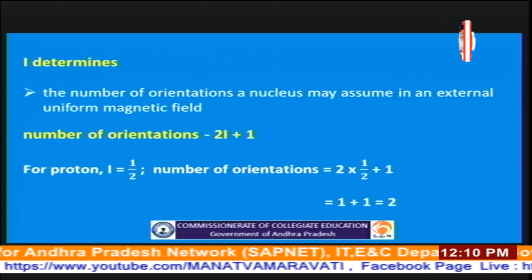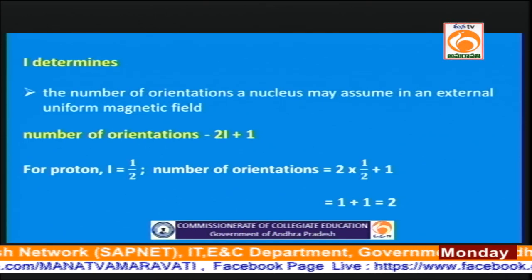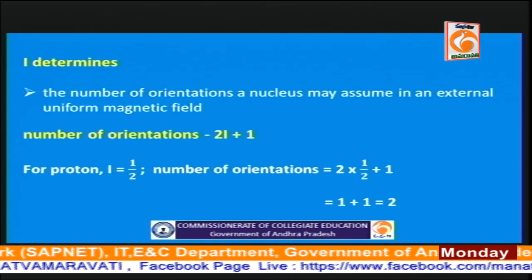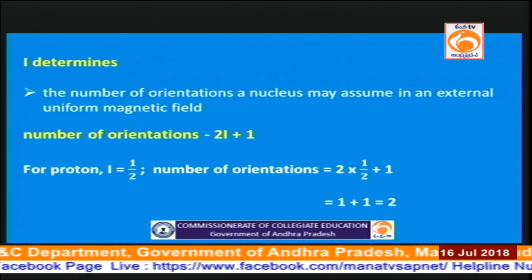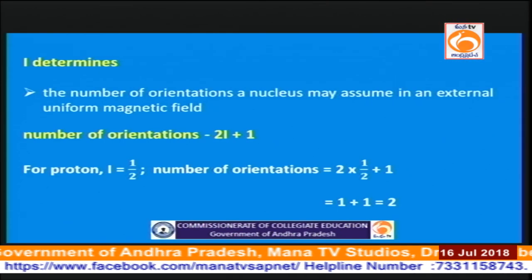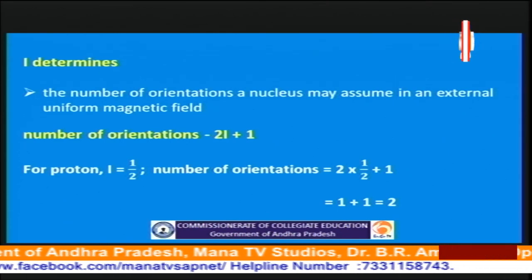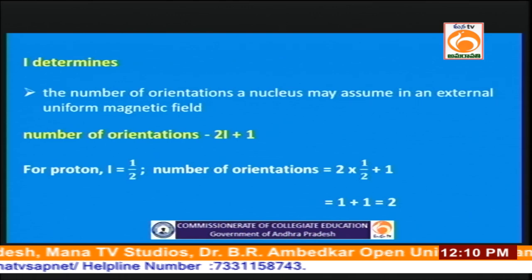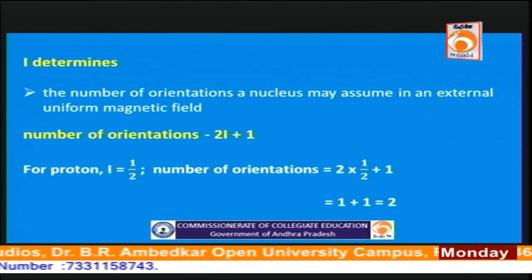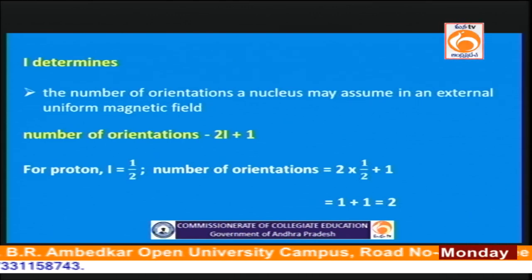For example, for a proton the I value is 1/2, therefore using the formula the number of orientations of a proton in a strong magnetic field is given by 2 × 1/2 + 1, that is 2. That means it will have two orientations. One orientation is known as alpha and the second orientation is beta.